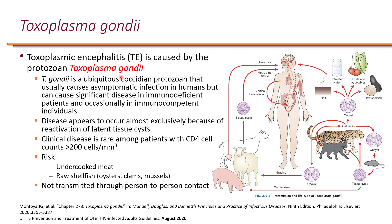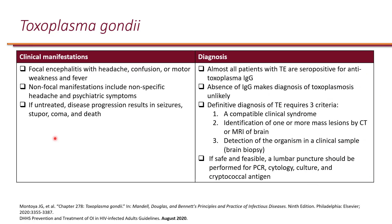This is an opportunistic infection, so people with intact host immunity don't have to worry about it. It affects people with a CD4 count less than 200 who are at risk. Clinical manifestations include focal encephalitis with headache, confusion, motor weakness, and fever.